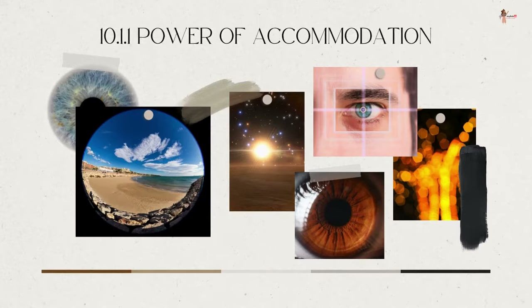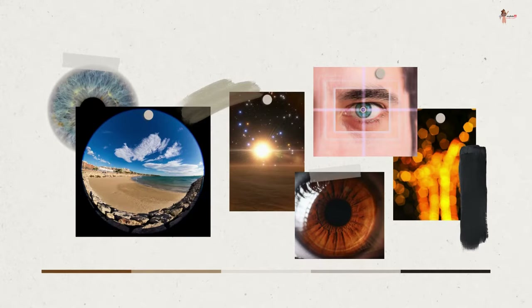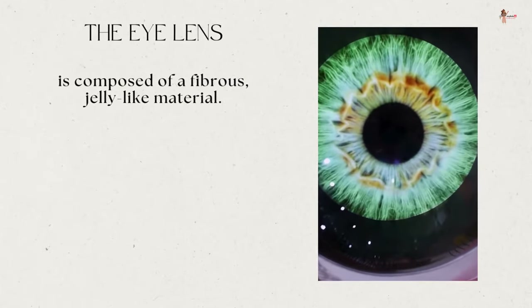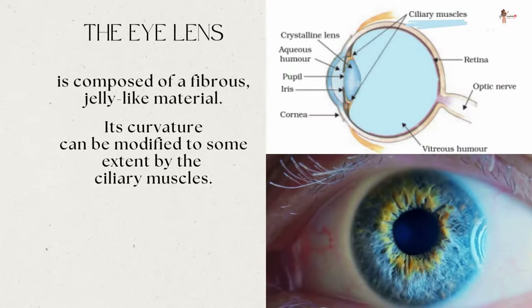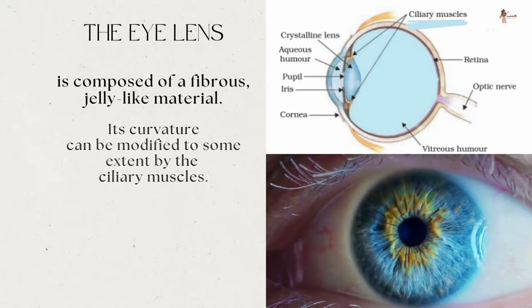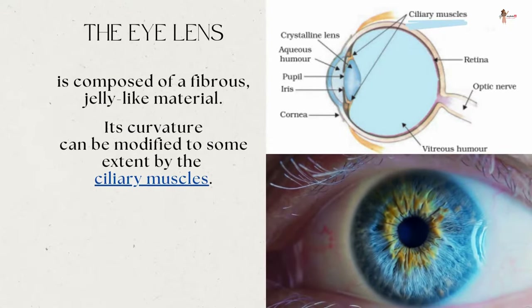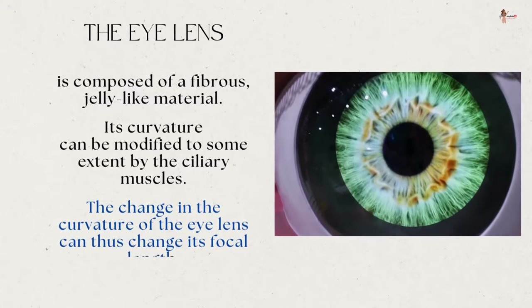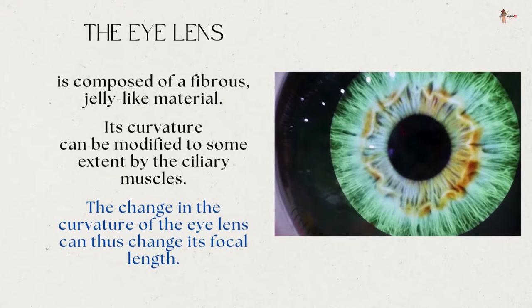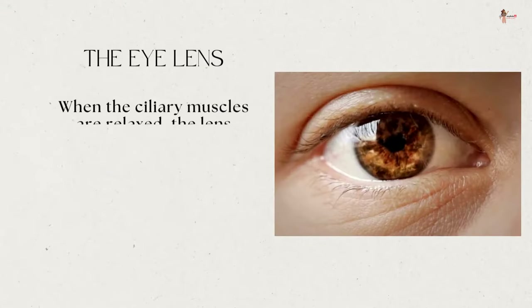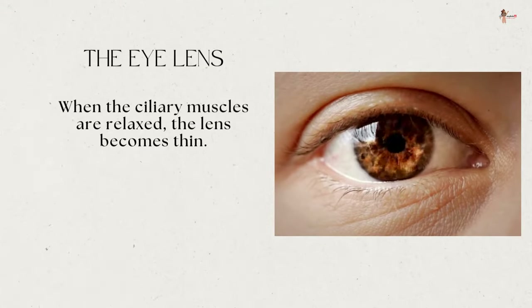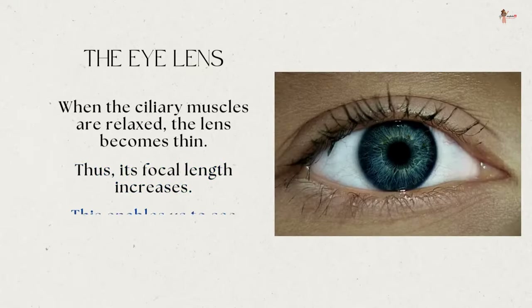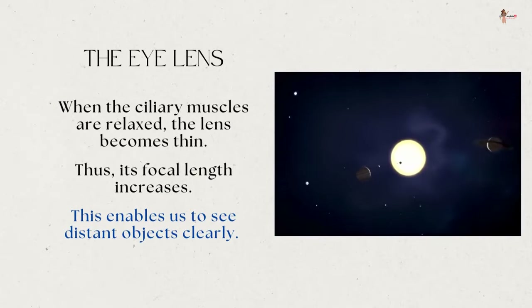Power of accommodation: the lens is composed of a fibrous jelly-like material. Its curvature can be modified to some extent by the ciliary muscles. The change in curvature of the lens can thus change its focal length. When the muscles are relaxed, the lens becomes thin, and its focal length increases. This enables us to see distant objects clearly.